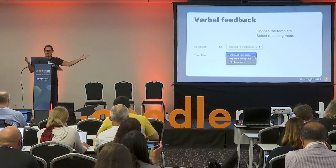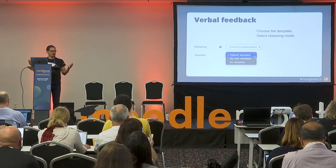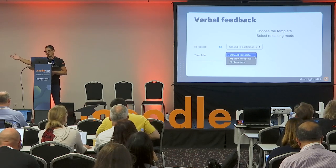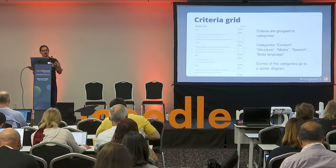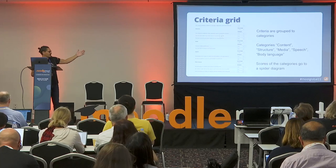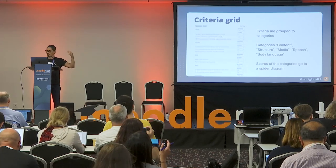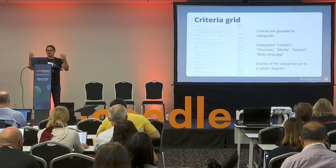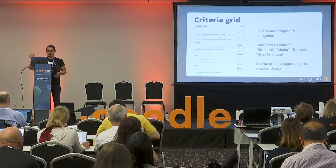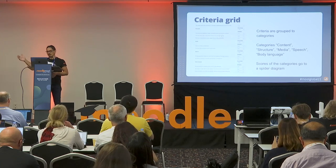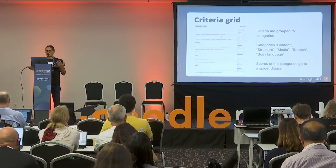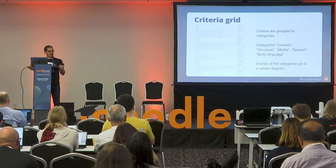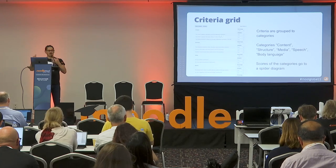As of now, the templates delivered alongside this plugin come in French, German, and English. Alongside the template selection, they also choose whether students see the feedback right away or only after they are released. This is the default grading criteria — criteria are grouped into categories that come along with the standard verbal feedback plugin. It aims at verbal presentations that students give in front of you, and it has categories of content, structure, media, speech, and body language. How students perform in these five categories will be illustrated not only in a table but also in a spider graph.